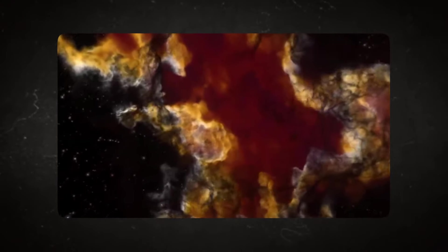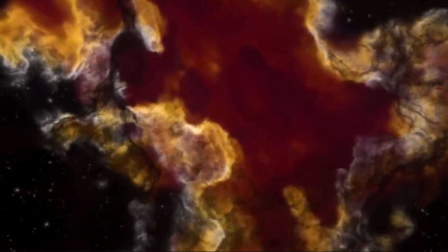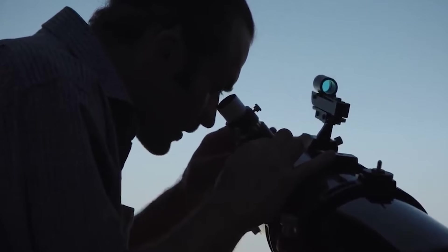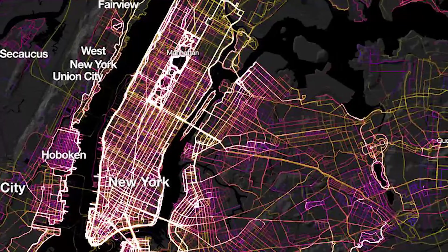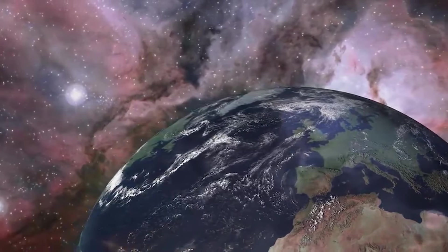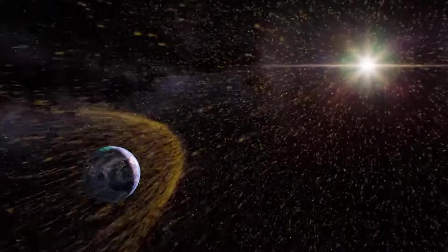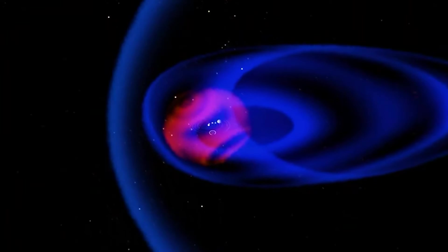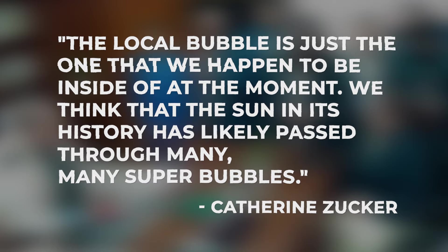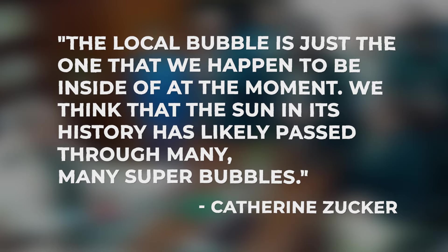Researchers suggest that more star-forming bubbles are likely common throughout the Milky Way. Study author and astronomer Alyssa Goodman, who founded GLUE, the data visualisation software that helped piece together the study's maps, explained in a statement that statistically, the Sun wouldn't be near the middle of a vast bubble if they were not common throughout the galaxy. According to Catherine Zucker, the local bubble is just the one that we happen to be inside of at the moment. We think that the Sun in its history has likely passed through many, many super bubbles.